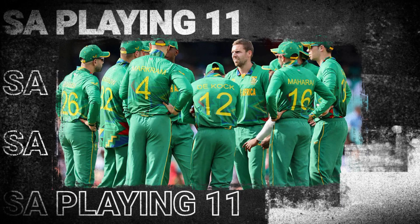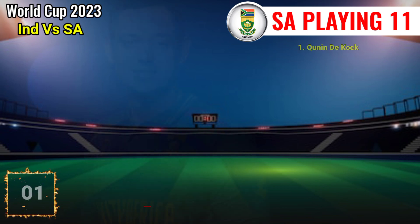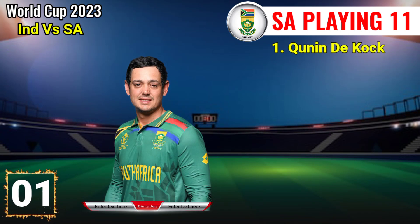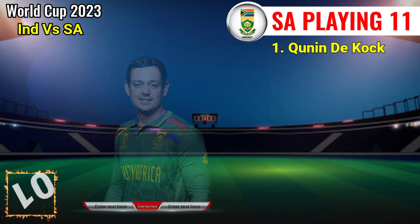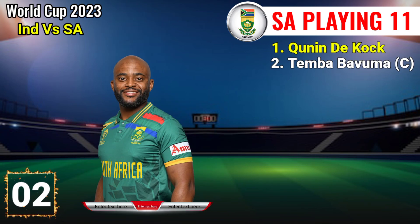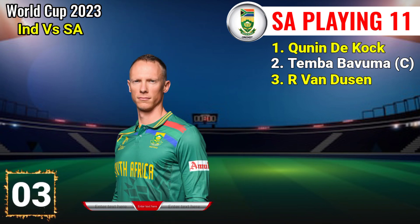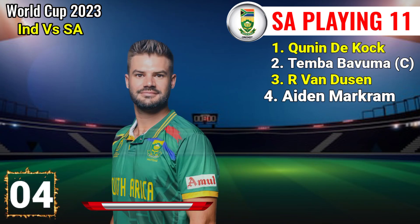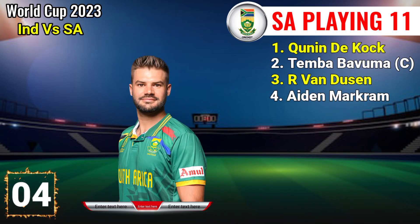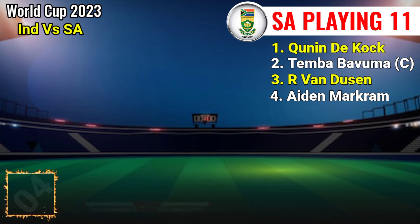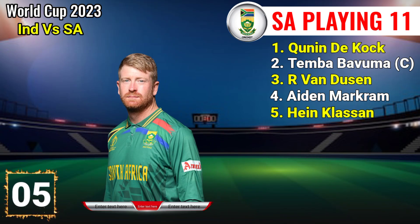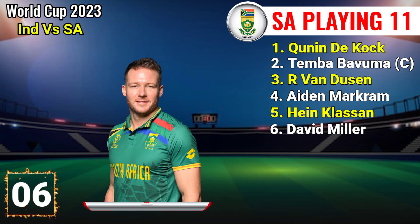Team South Africa final playing 11. Number 1: Quinton de Kock, left-hand batsman. Number 2: Temba Bavuma, right-hand batsman and captain. Number 3: Rassie van der Dussen, right-hand batsman. Number 4: Aiden Markram, right-hand batsman. Number 5: Heinrich Klaasen, right-hand batsman.